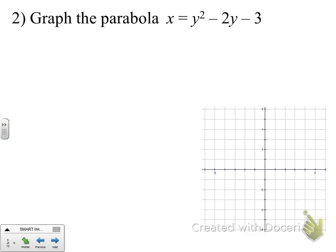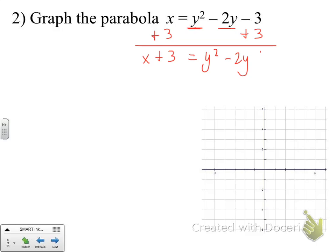Here's our next example. We have a y squared and a y term, so we're going to have to complete the square for the y's. The first thing we do is move the constant to the other side, giving us x plus 3 equals y squared minus 2y. Because there's a coefficient of 1 in front of the squared term, we find our completing-the-square number: negative 2 divided by 2 gives negative 1, and negative 1 squared is positive 1. We add 1 to both sides.